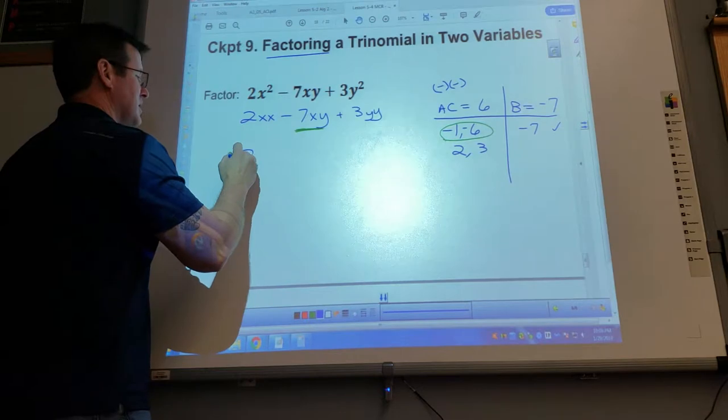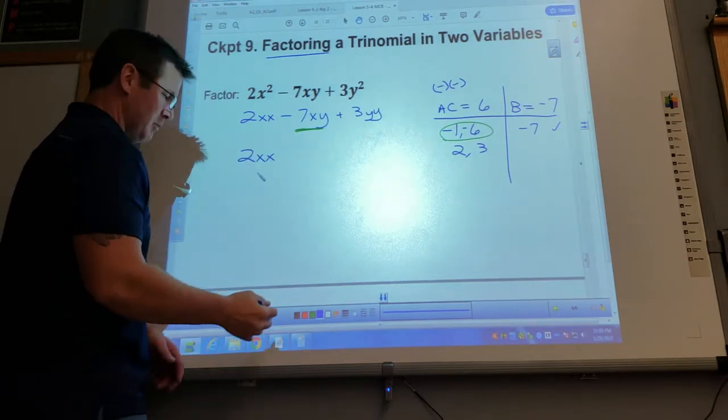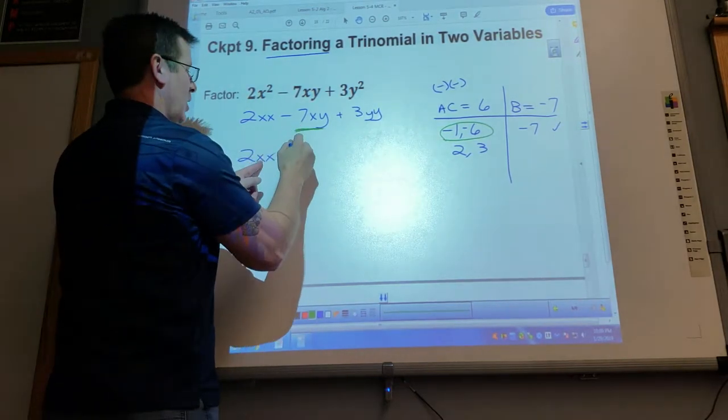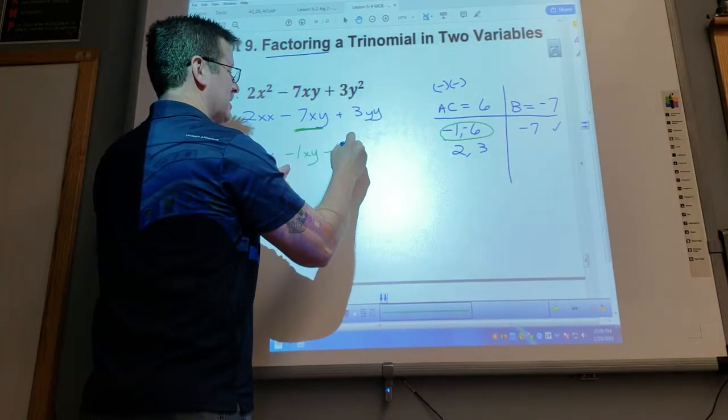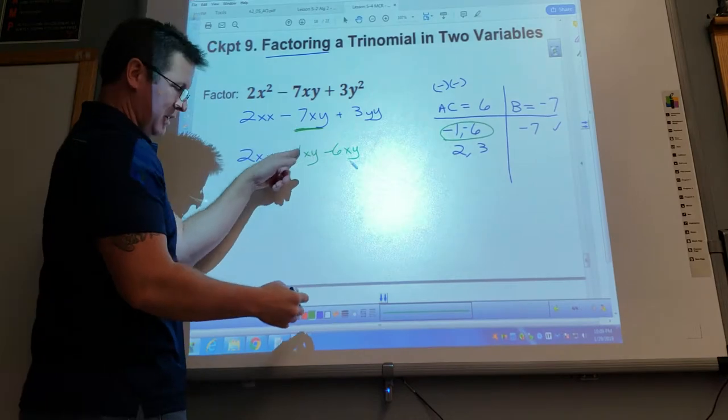How am I going to do that? Same way I've been doing it. I'm going to use negative 1XY and then negative 6XY, because that's still mathematically negative 7XY.